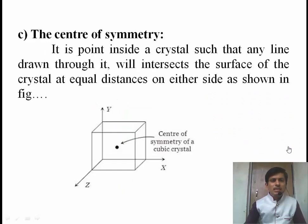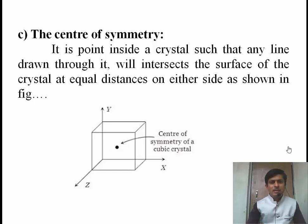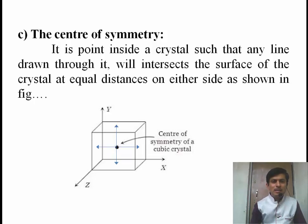The third element is the center of symmetry. It is a point inside a crystal such that any line drawn through it will intersect the opposite faces at equal distances. If we draw a line passing through this point, the line will intersect the opposite faces at equal distances. A second line drawn through it also intersects the opposite faces at equal distances. Therefore, we say this crystal possesses a center of symmetry.